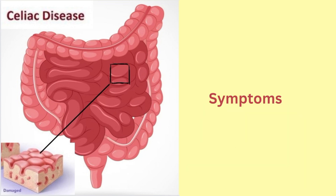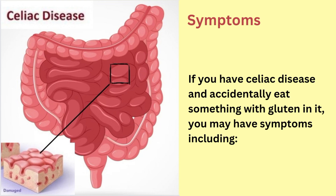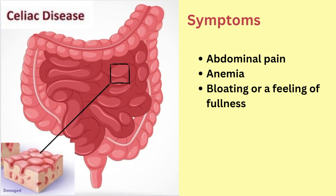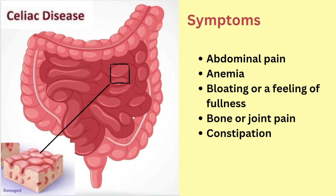Now let us see what are the symptoms of it. If you have celiac disease and accidentally eat something with gluten in it, you may have symptoms including abdominal pain, anemia, bloating or a feeling of fullness, bone or joint pain, constipation, diarrhea, gas, heartburn.